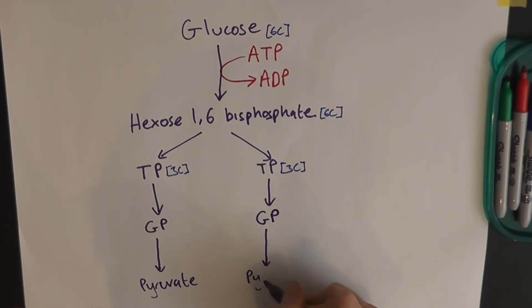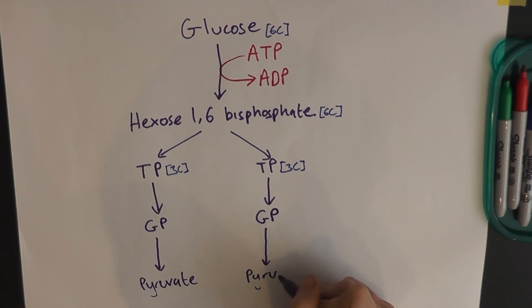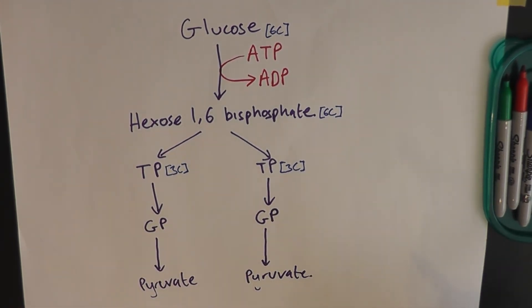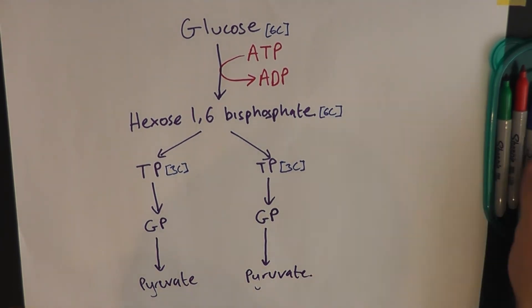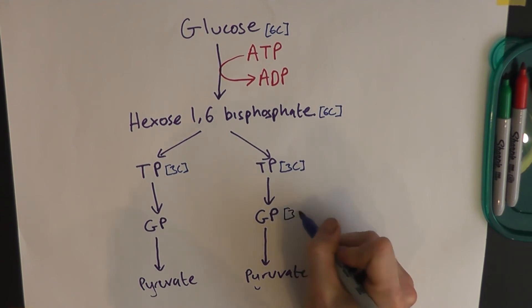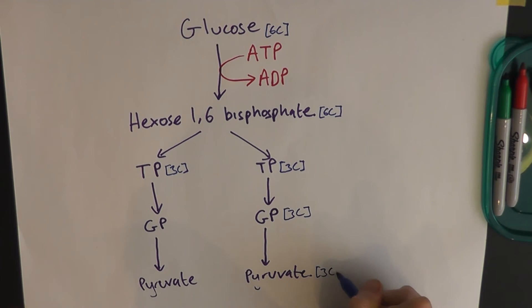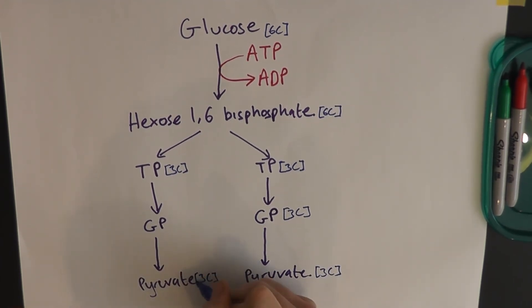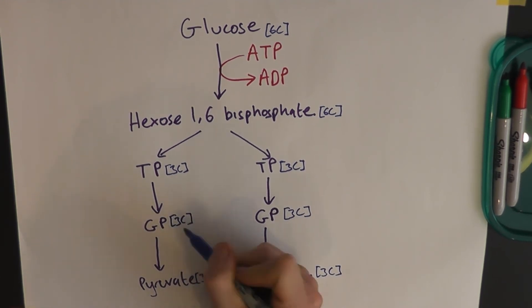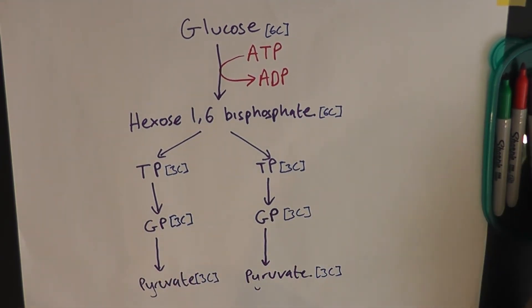And the glycerate-3-phosphate, that gets turned into something called pyruvate. And I've got to write it out twice, because there are two molecules of pyruvate. And they, all of the molecules here, are all three-carbon molecules. And pyruvate is the useful product of glycolysis. But it's not the only useful product of glycolysis.